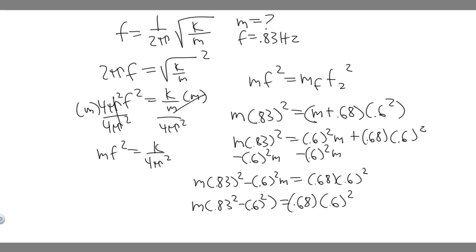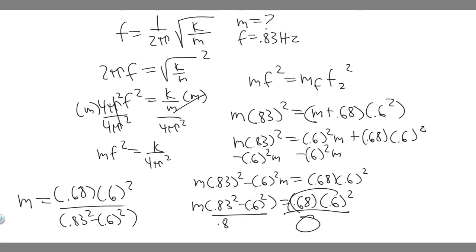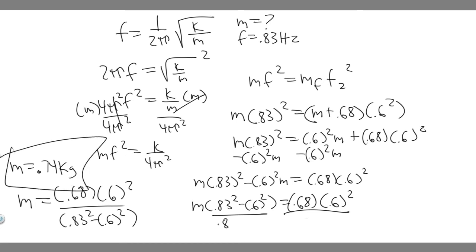Divide both sides by (0.83 squared minus 0.6 squared), so m equals 0.68 times 0.6 squared all over 0.83 squared minus 0.6 squared. Plug this into your calculator and you get m is approximately 0.74 kilograms. So the mass at the beginning is 0.74 kg — that's your answer.